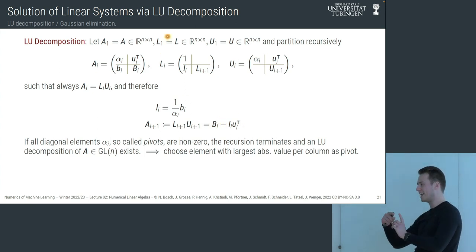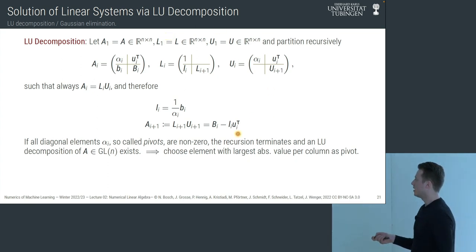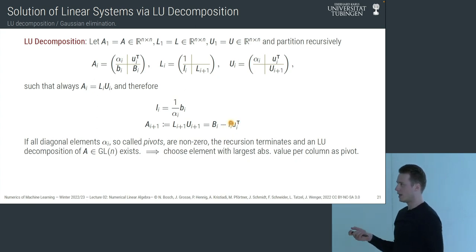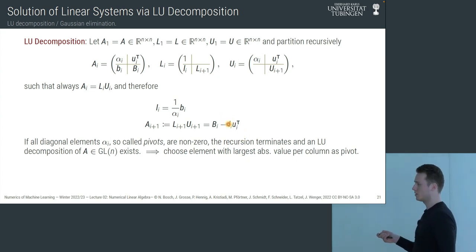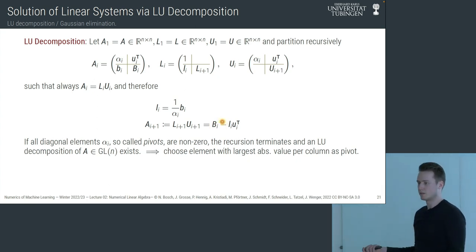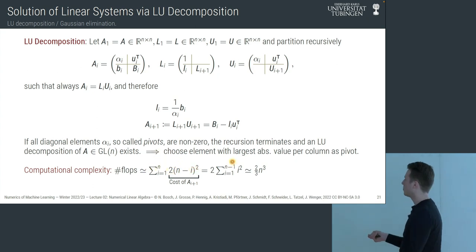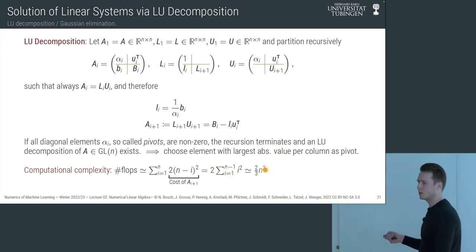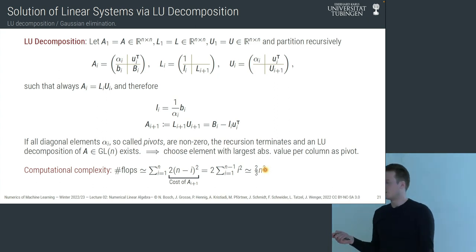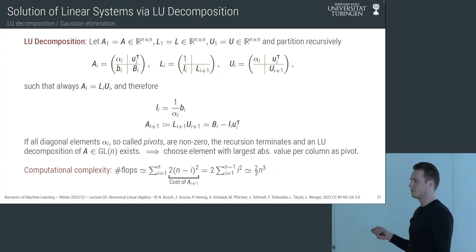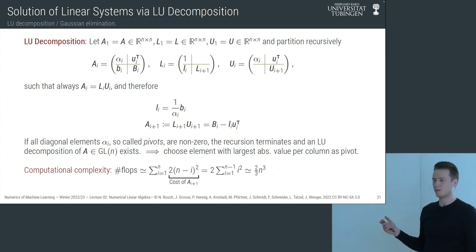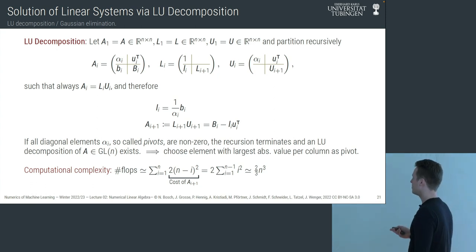You may notice the strategy we use — subtracting multiples of a row from all rows below it — is exactly Gaussian elimination. This is an efficient and clever way of doing Gaussian elimination to resolve linear systems. Since the diagonal entries of L are set to 1, we don't need to store them, and we can perform the LU factorization in-place inside the original array.